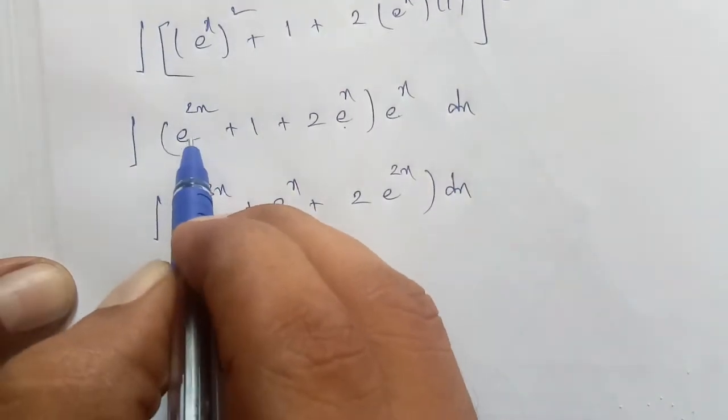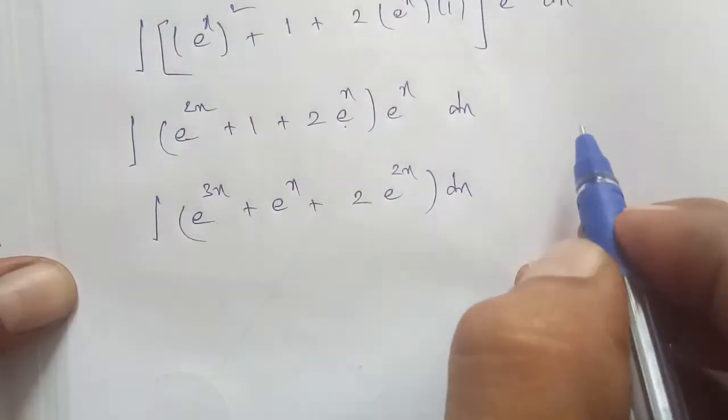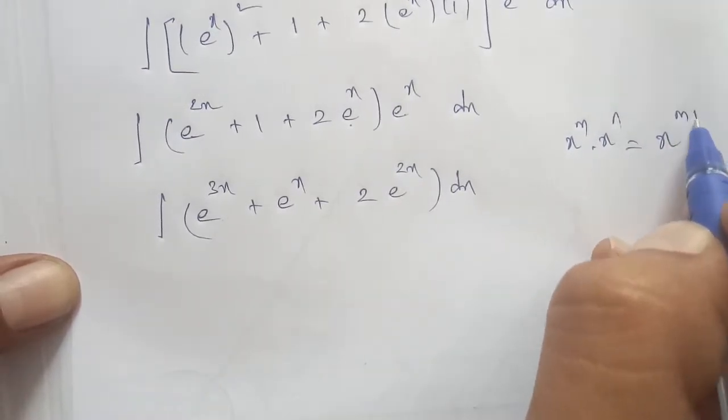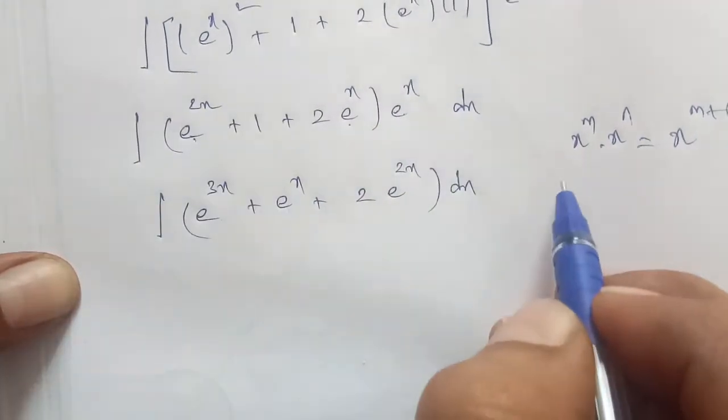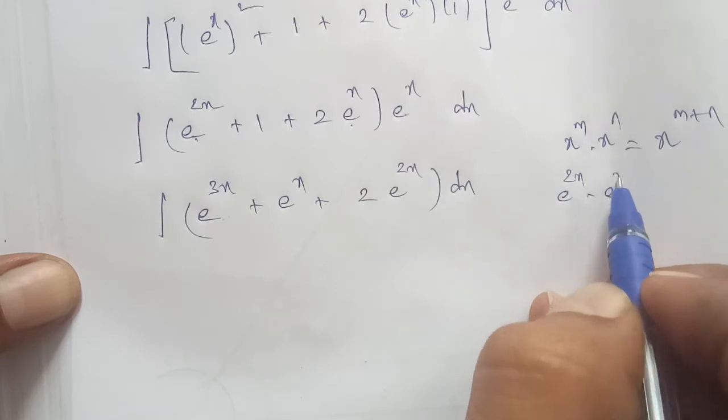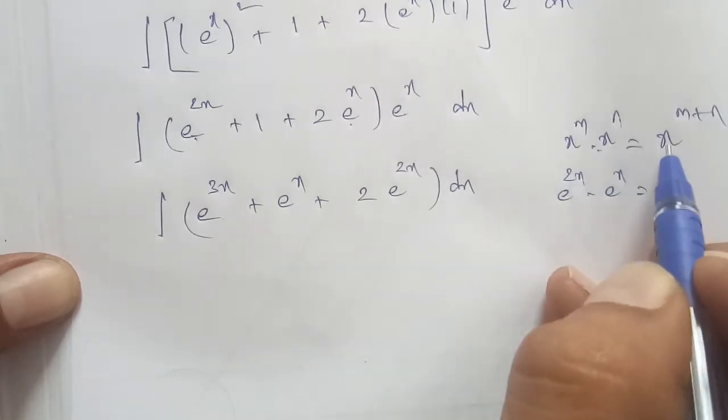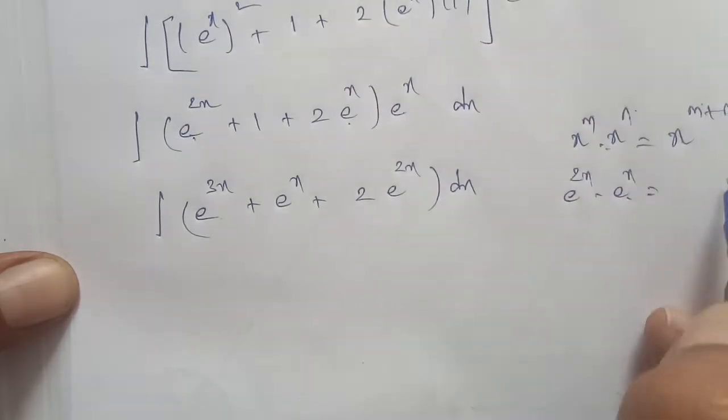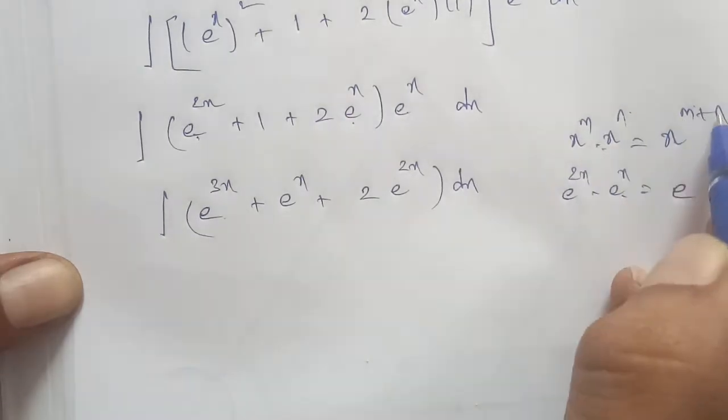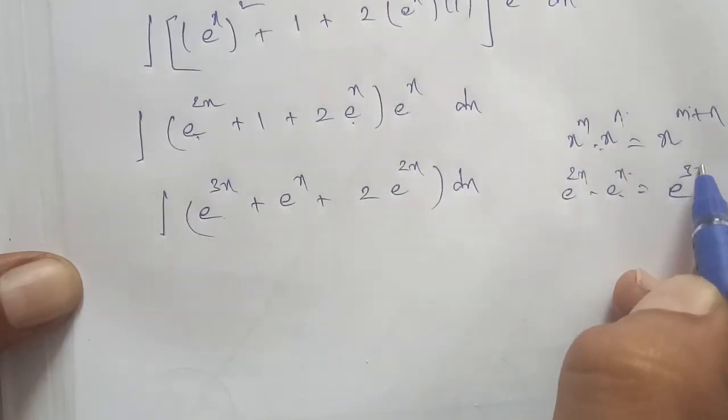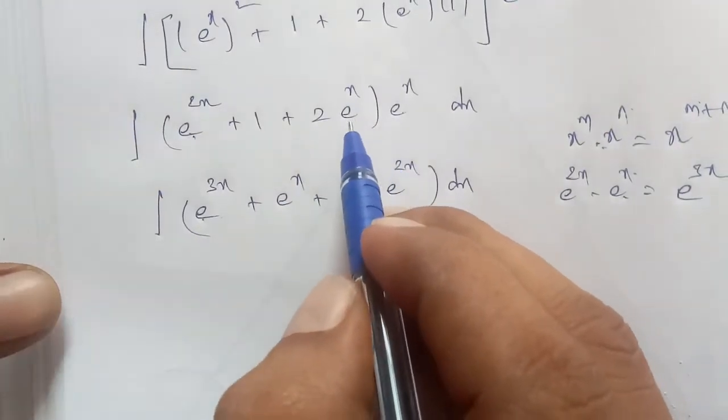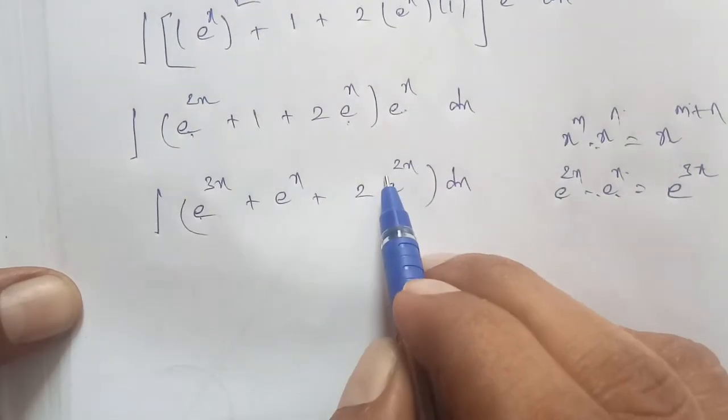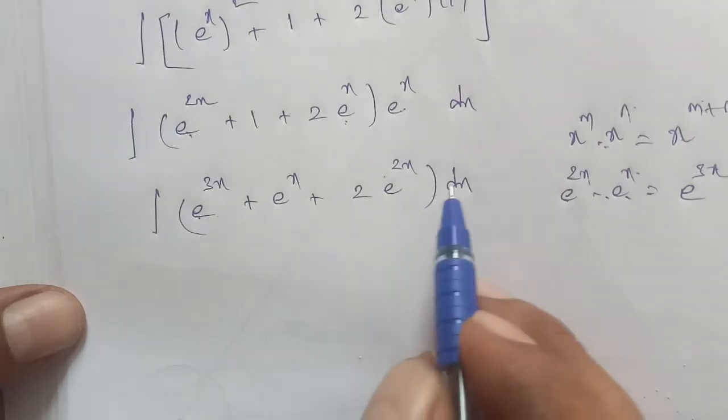So e^(2x) * e^x becomes e^(3x). Using the rule: e^m * e^n = e^(m+n). So e^(2x) * e^x: 2x + x equals 3x. Similarly, e^x * e^x gives e^(2x) because x + x = 2x. When multiplying exponential terms with the same base, we add the exponents.